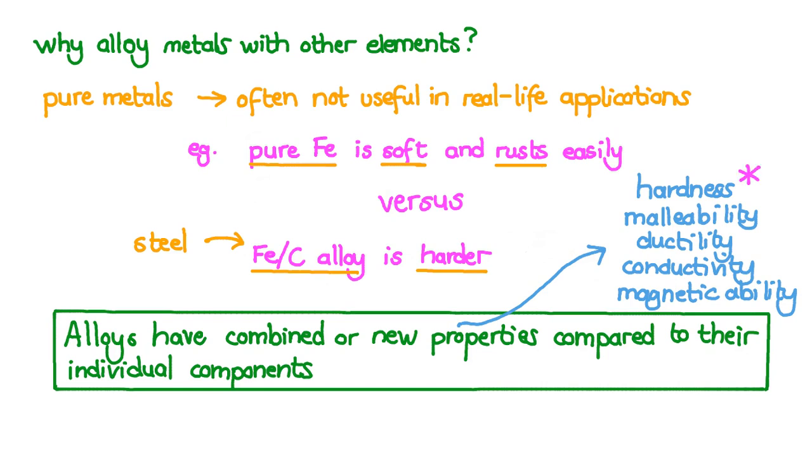Alloys are usually much harder and stronger than the pure metal. Alloying is very useful because these new properties can be purposefully adjusted or controlled to produce a material that is just right for a certain application. In other words, we can tailor make the properties of materials.